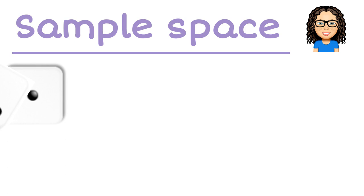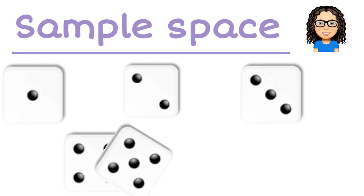If I think about a sample space, this is looking at if I roll a dice, all of the possible outcomes I could get when I roll a dice. So it's a list of all the options.